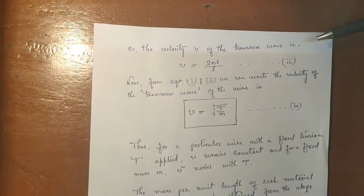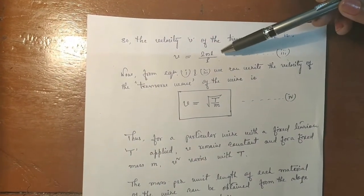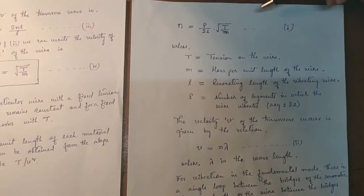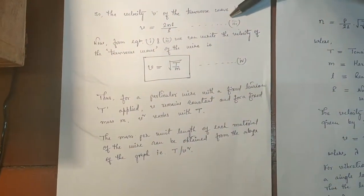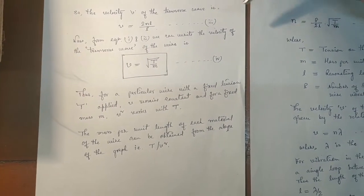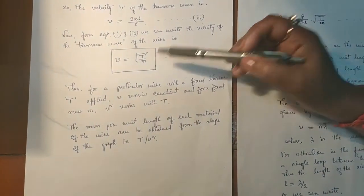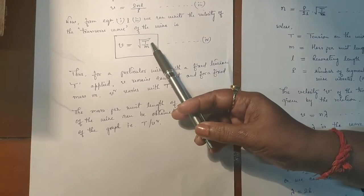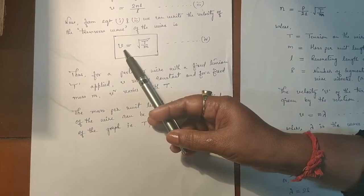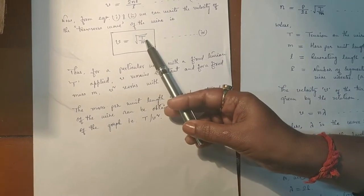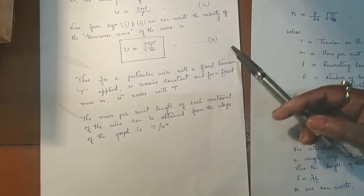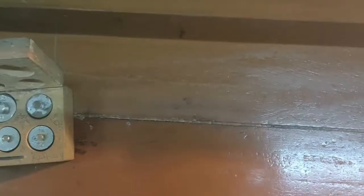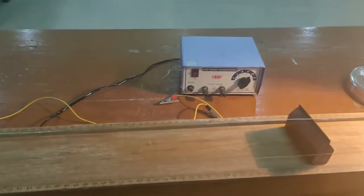The velocity of the transverse wave is v equals to 2l divided by p. From equations one and three, we can write the velocity of the transverse wave of the wire as v equals to root of T by m. Thus for a particular wire with a fixed tension T applied, v remains constant, and for a fixed mass m, v-squared varies with T. So the mass per unit length of each material of the wire can be obtained from the slope of the graph, that is T versus v-squared. Now let's start the procedure — how to perform the experiment.